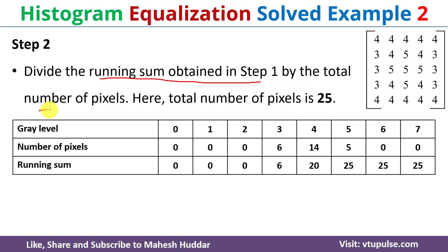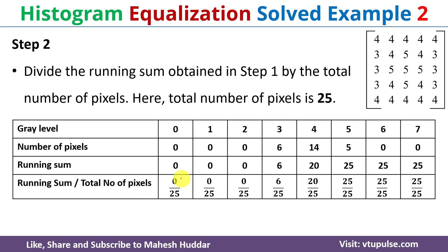In the next step, we divide the running sum by the total number of pixels. The given input is a 5×5 matrix, so the total number of pixels is 25. We divide each running sum by 25: 0/25, 0/25, 0/25, 6/25, 20/25, 25/25, 25/25.